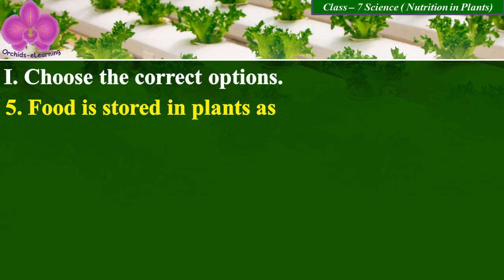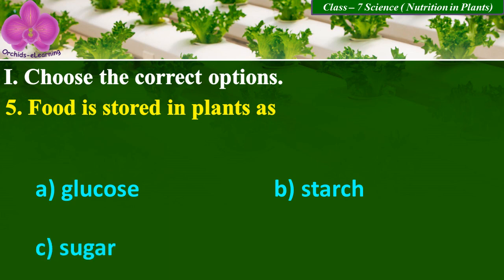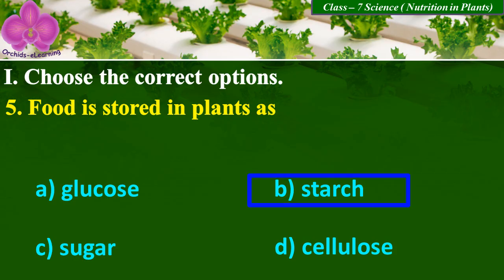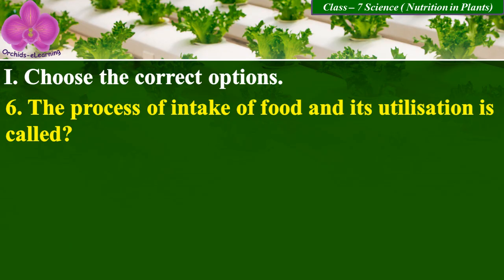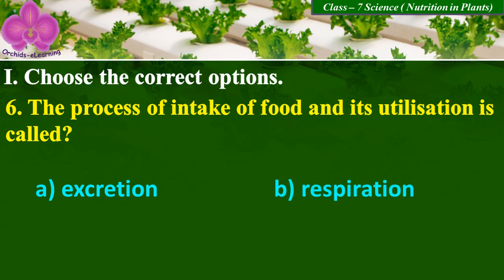Food is stored in plants as — option A: glucose, B: starch, C: sugar, and D: cellulose. Answer: B, starch. The process of intake of food and its utilization is called A: excretion, B: respiration, C: digestion,